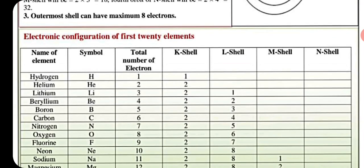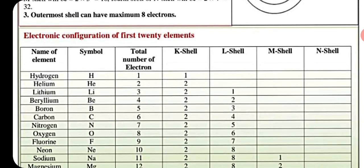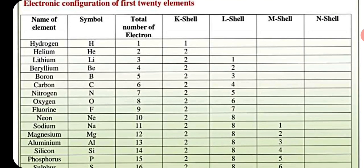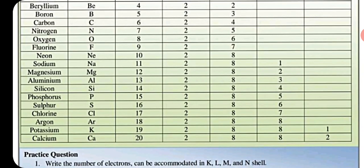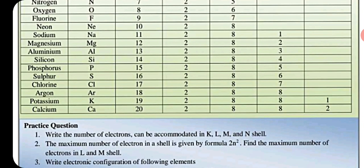अब electronic configuration हम देख लेते हैं कुछ 20 elements का। Hydrogen का है तो total number electron एक होता तो K shell में एक ही है। Helium के दो हैं तो K shell में दो होंगे। Lithium के तीन है तो K shell में दो और एक L shell में, ठीक है ना।